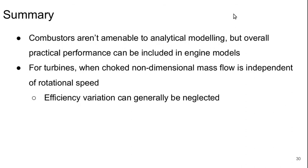To summarize: combustors are not amenable to analytical modeling, but overall practical performance can be included in engine models by taking the first turbine stator row to be part of the combustor and assuming a 4% stagnation pressure loss. For turbines, when they're choked — which is almost always — the non-dimensional mass flow is basically independent of rotational speed, and the efficiency variation can generally be neglected. In the next few lectures, we'll use what we've learned about component characteristics to look at the off-design behavior of an entire engine.